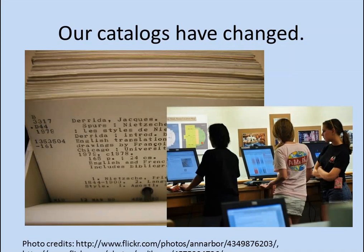Our catalogs have changed. In 1978, card catalogs still ruled the day in libraries. Now we have computerized catalogs, and AACR2 reflected card catalogs in a lot of ways — it prescribed a lot of abbreviations. You never fully spelled out the state when transcribing the place of publication, because we had to save space on those 3x5 index cards. And the whole concept of a 'main entry' was based on how things were filed in the card catalog. Now in the day of hypertext and hyperlinks, you really don't have to obey all those rules anymore, and RDA is moving away from that.